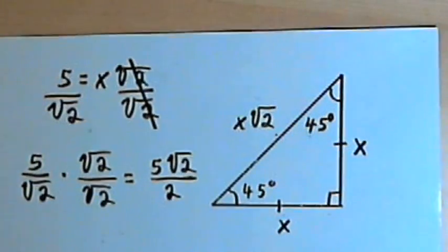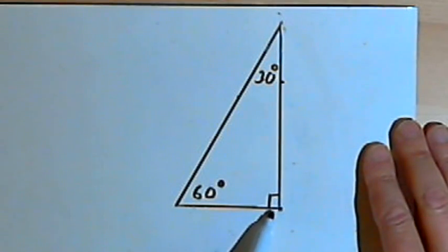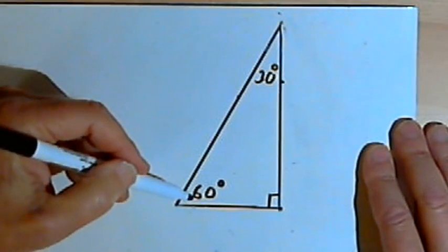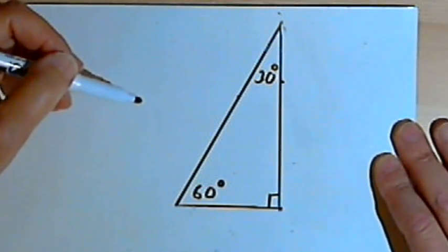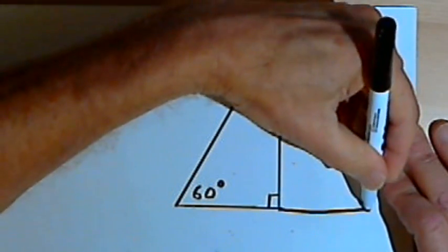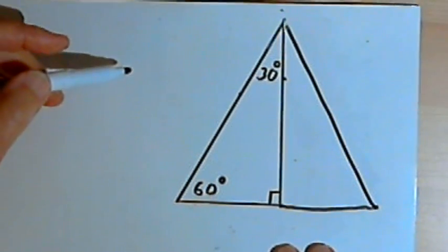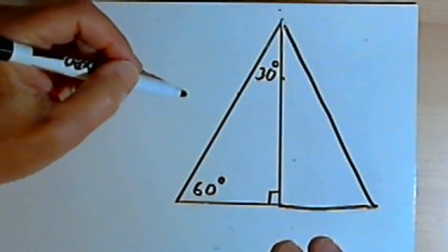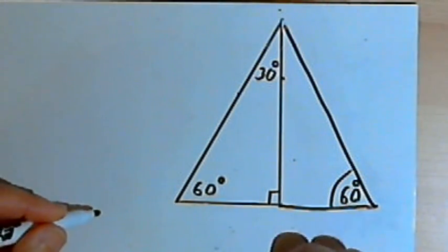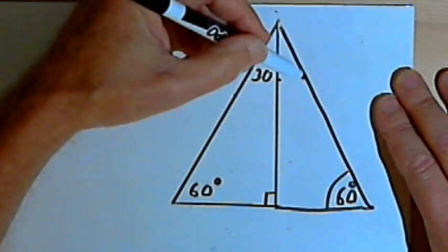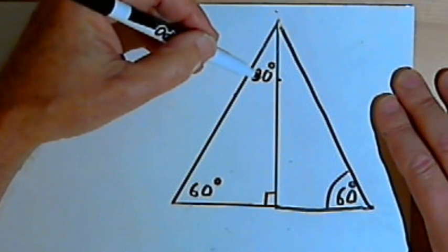Now let's talk about the other special right triangle. Besides having a 90-degree angle, it has a 30-degree and a 60-degree angle, so it's called a 30-60-90-degree triangle. To understand this, realize that it's just one-half of an equilateral triangle. An equilateral triangle has three equal sides and three congruent 60-degree angles. If we cut it in half, one of those 60-degree angles gets cut in half and becomes the 30-degree angle.